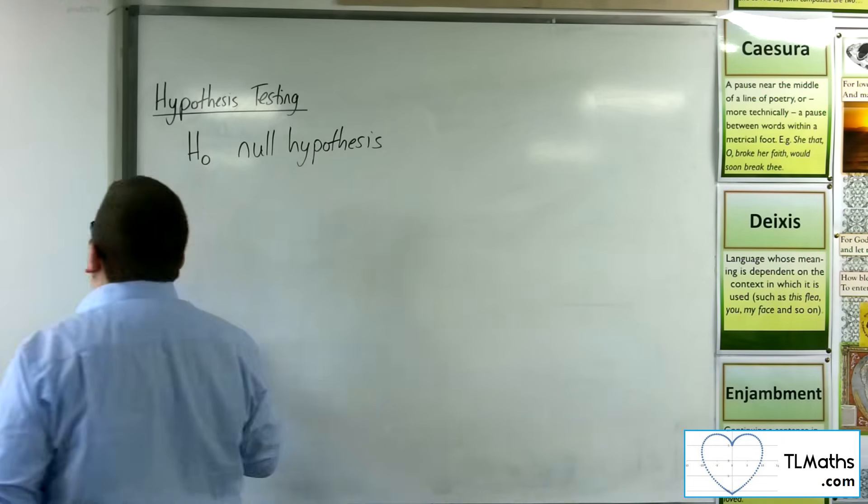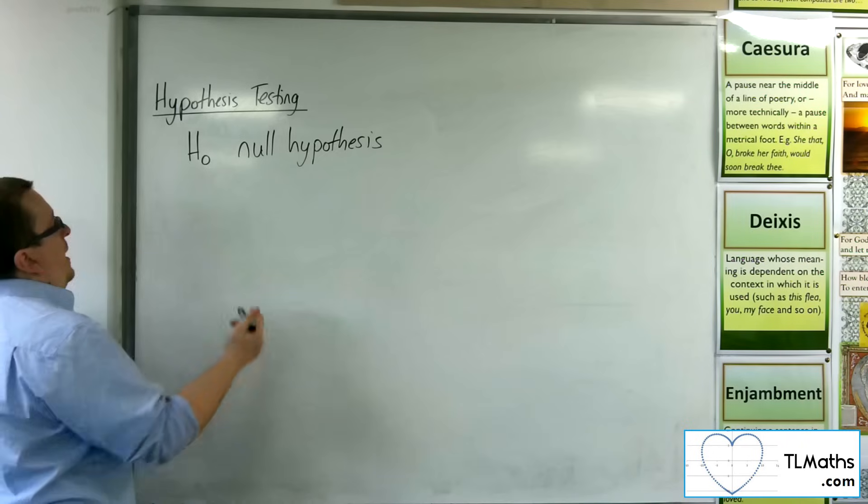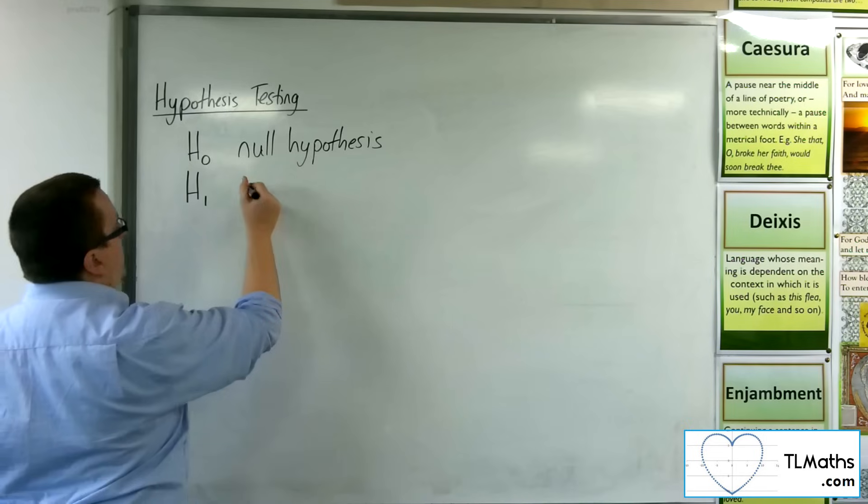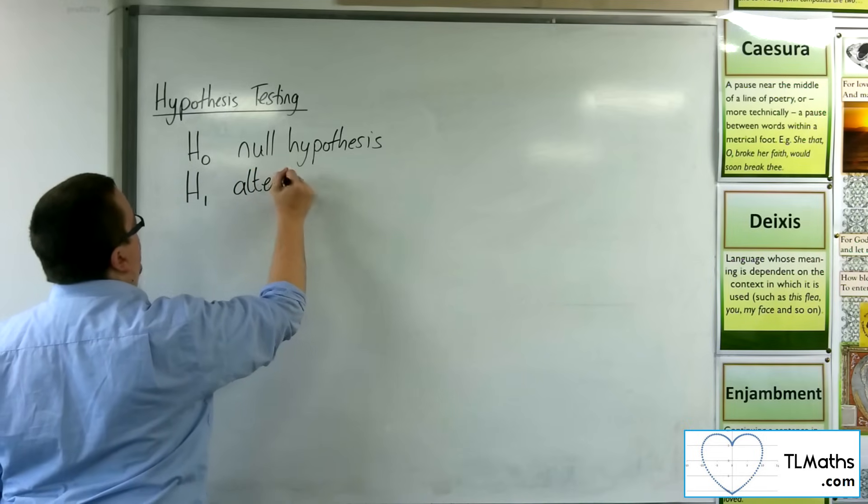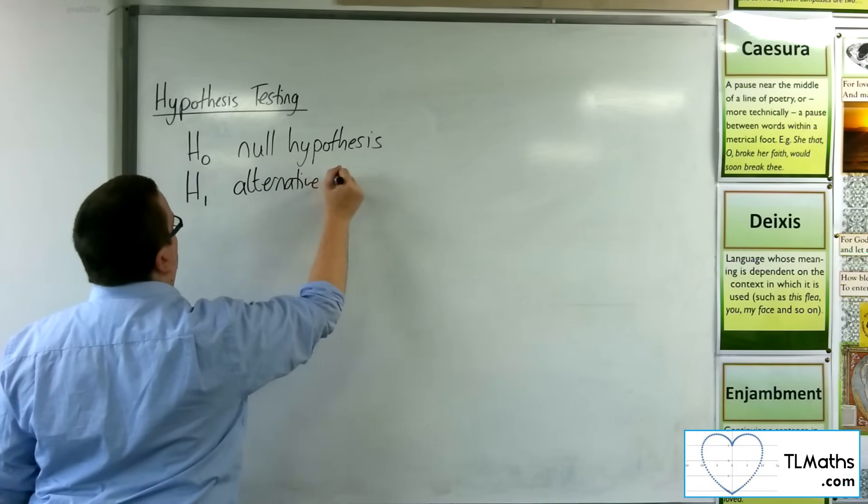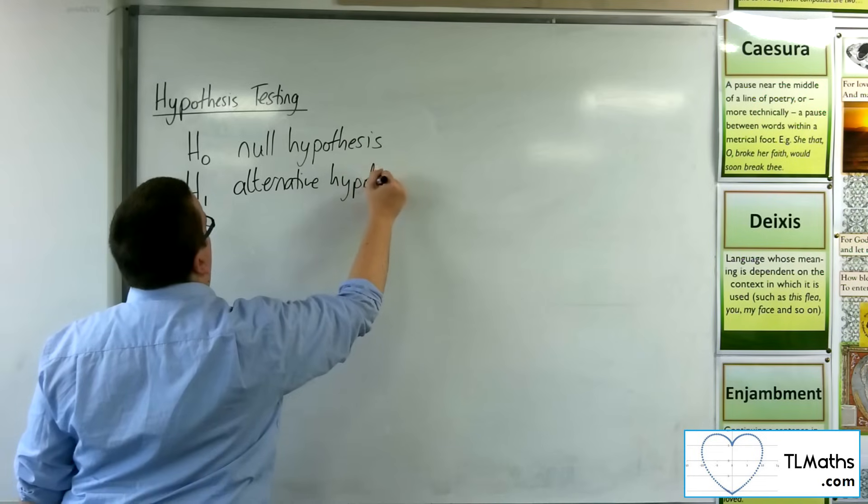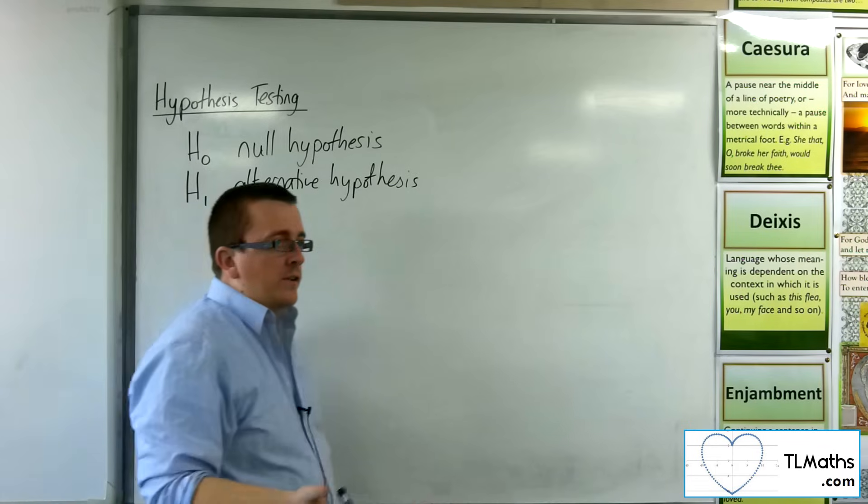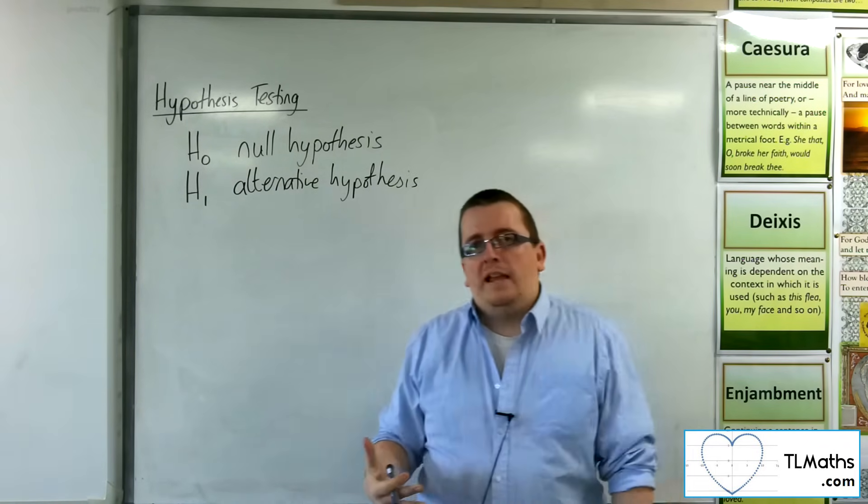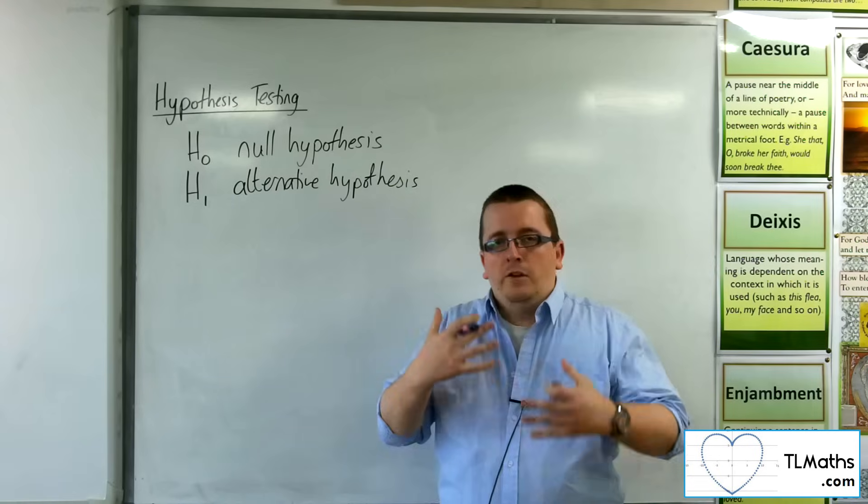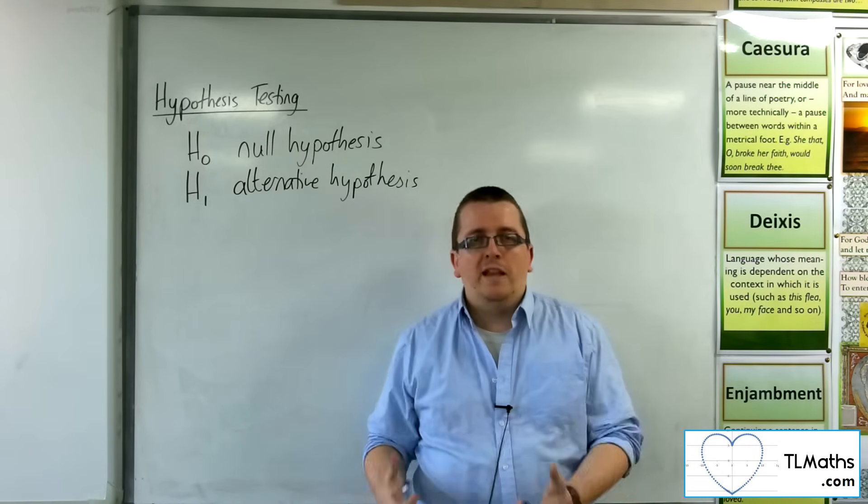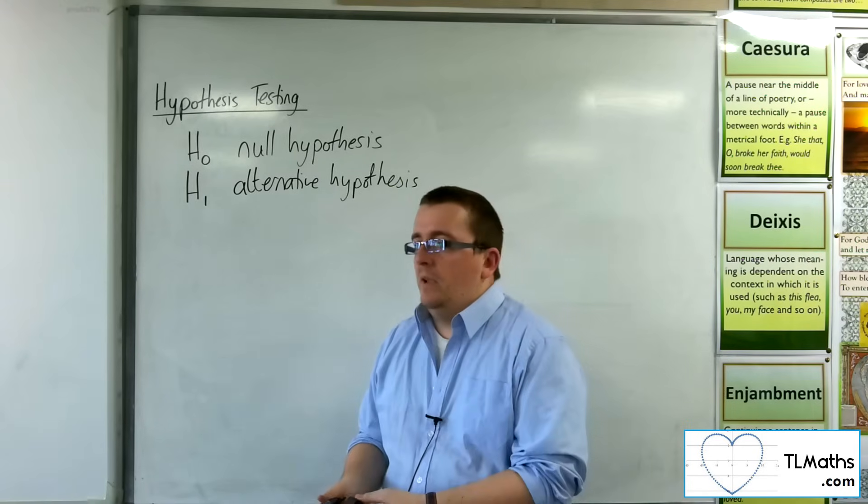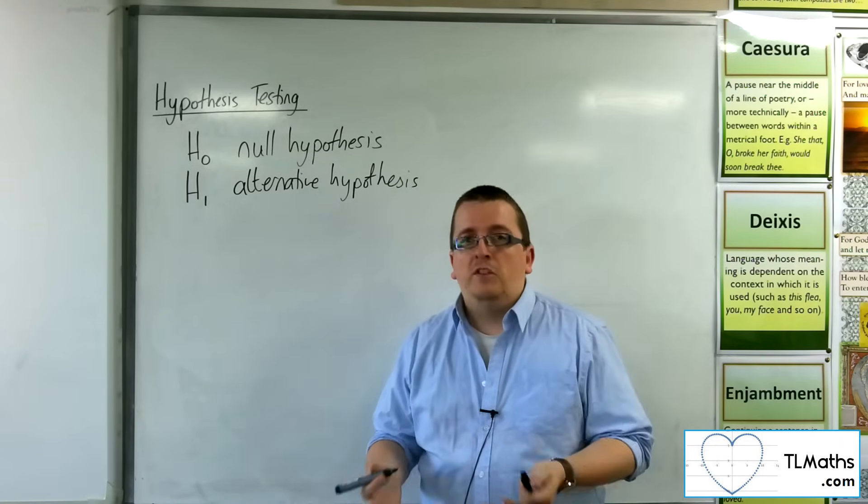And perhaps what you're thinking about is an alternative hypothesis, which we refer to as H1. And the alternative hypothesis would say, well, actually, the probability of heads coming up is more than 0.5. I think that the probability is greater than 0.5 for heads to appear. It's got a greater chance of appearing than 0.5 because I think the coin is biased that way.